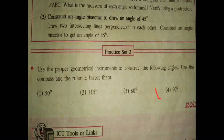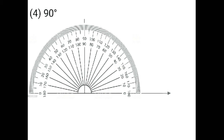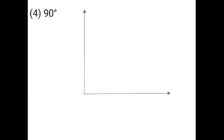Last one is 90 degree. 90 degree angle is very easy to draw, we will do it directly. 90 degrees here — you have to draw the other ray straight. Give the name of the angle: angle EFG. Keep your rounder on point F and draw the arc. Give the name of the arc — point J and point K.